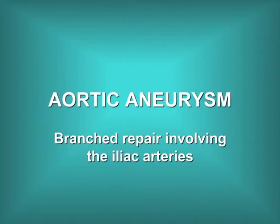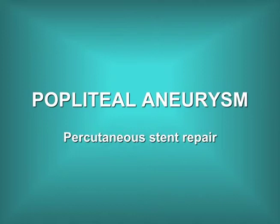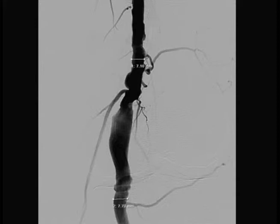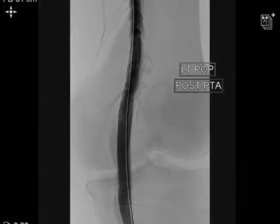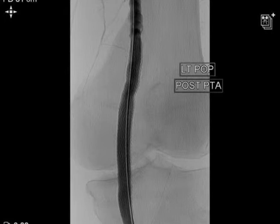Occasionally a complex aneurysm will require a branch repair involving the iliac arteries — we call this an iliac bifurcation device. Popliteal aneurysms can also be repaired by tube stent grafts. These procedures are usually percutaneous and can be done under local anaesthetic. In this picture we see a popliteal aneurysm, and it is possible to make out the knee joint. The diameter of the popliteal artery is demonstrated above and below the knee joint. The stent graft has been placed across the popliteal artery aneurysm and we can see that there is no endoleak and there is smooth flow of blood through the left popliteal artery.